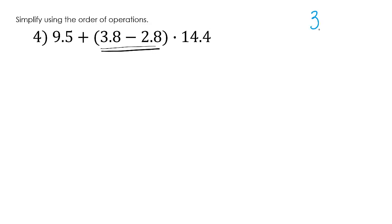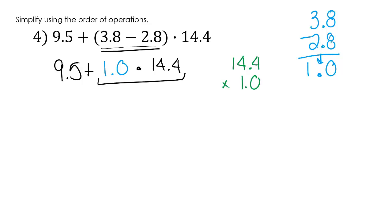So in the parentheses, it says 3.8 minus 2.8. Do you notice that I lined up my decimals? 8 minus 8 is 0. Bring down my decimal. 3 minus 2 is 1. All right, well, let's put it in there. We'll have 9.5 plus 1.0 times 14.4. Now orders of operations say we have to multiply, divide, before we add and subtract. Well, hopefully you know this, but 14.4 times 1.0—well, 14.4 times 1 is itself, 14.4.